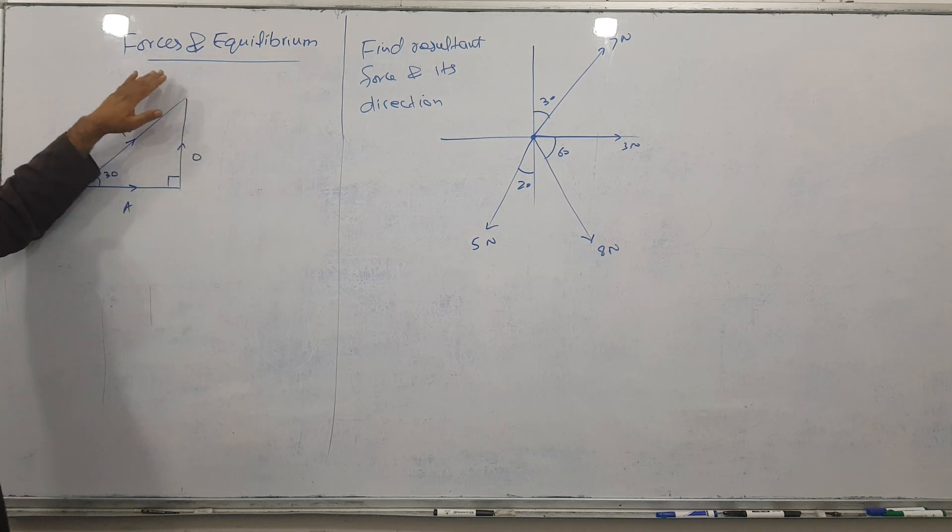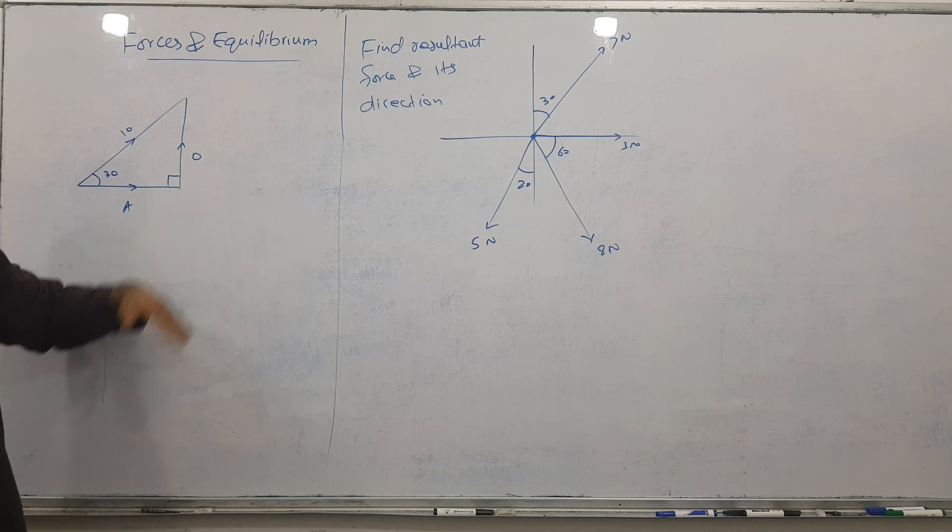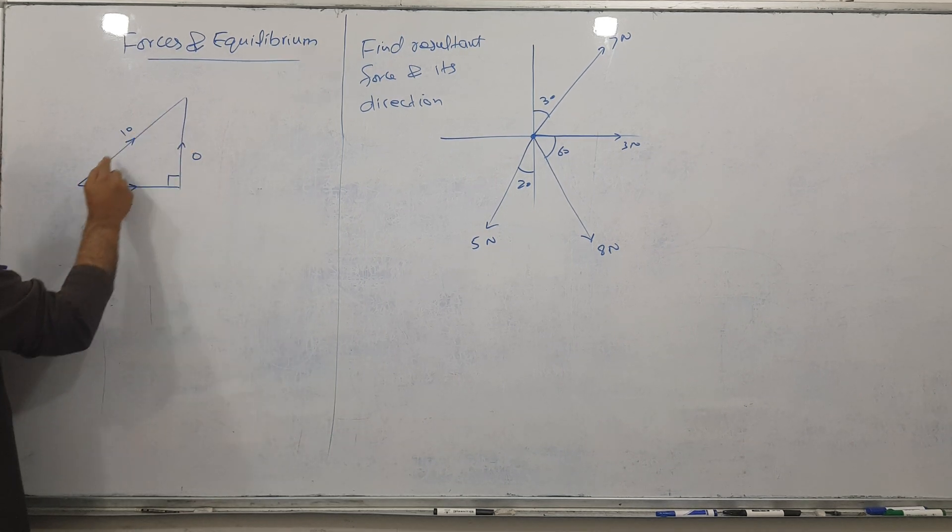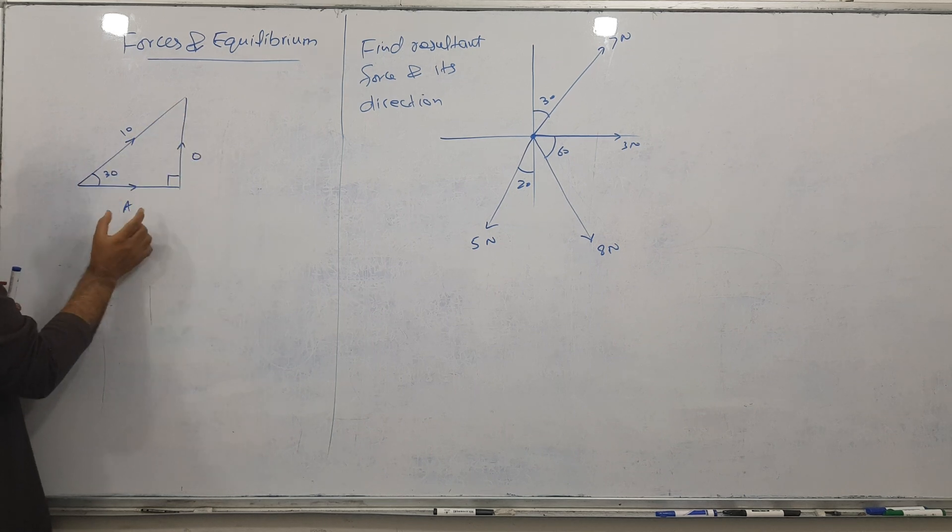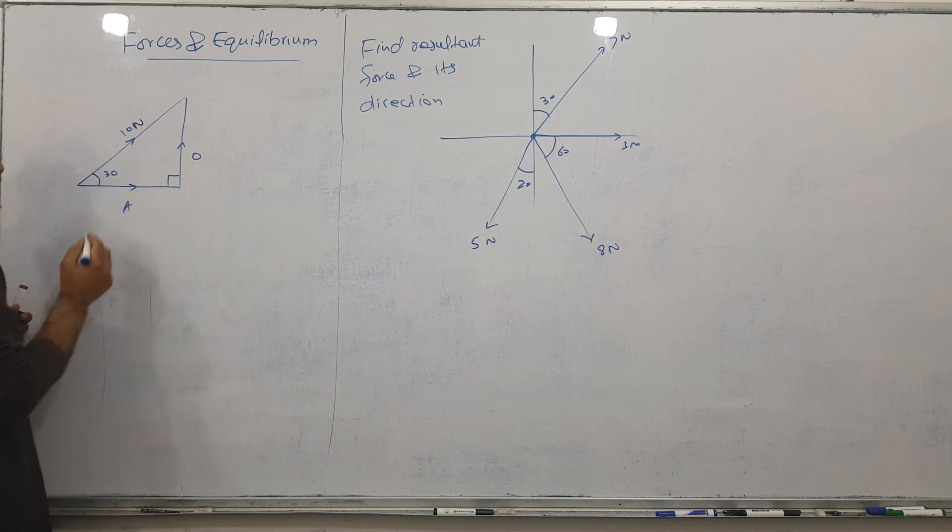Today is the first lecture on forces and equilibrium, the first chapter of our mechanics. We have one force acting here and I made a triangle. Someone asks how to find the adjacent angle - the angle is 30 degrees, force is 10 Newtons.